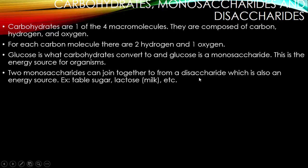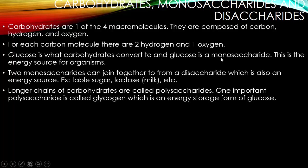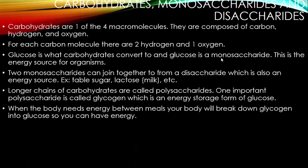If we have one saccharide or one sugar molecule, it's a monosaccharide. Longer chains of carbohydrates are called polysaccharides — one is a monosaccharide, two is a disaccharide, and two or more gives us many saccharides, which is where the polysaccharide comes in. One important polysaccharide is glycogen, which is an energy storage form of glucose. When the body needs energy between meals, your body will break down glycogen into glucose so you can have energy.